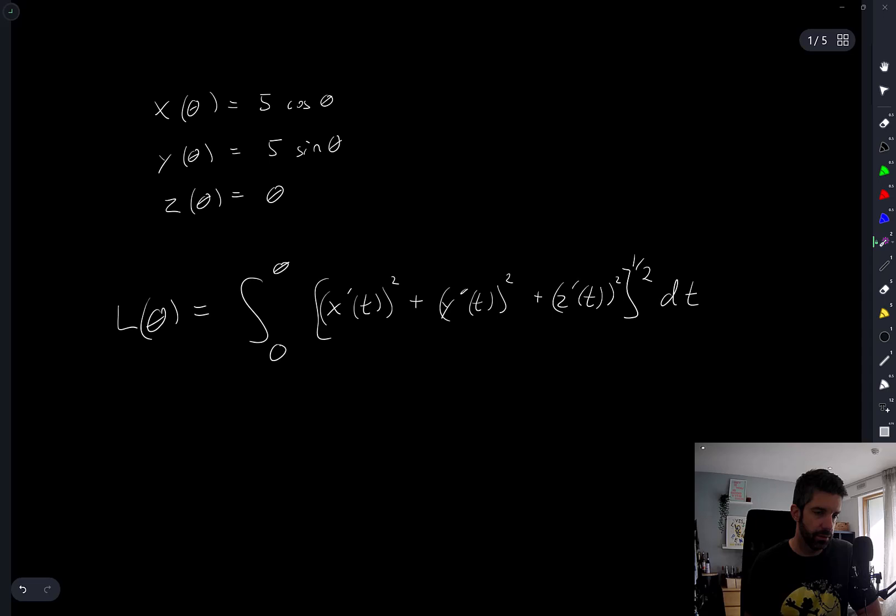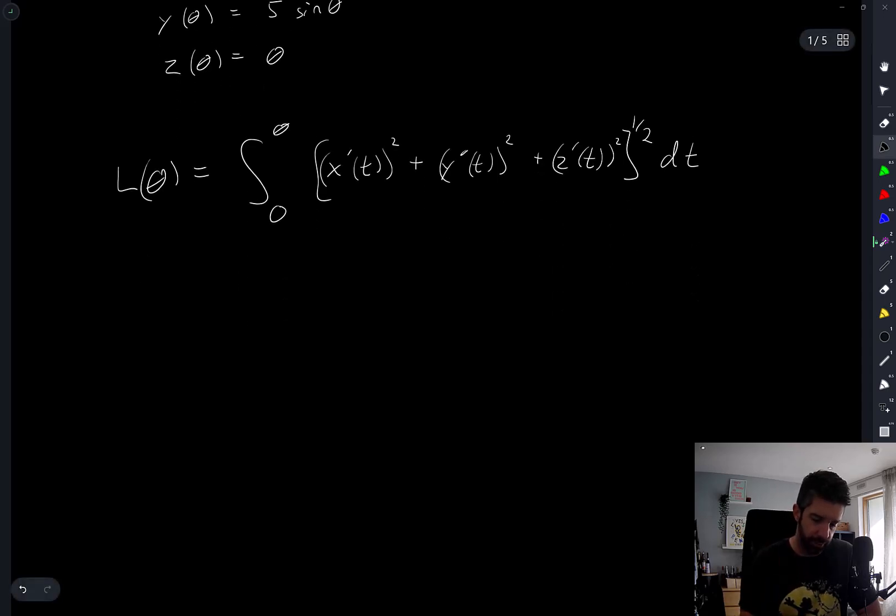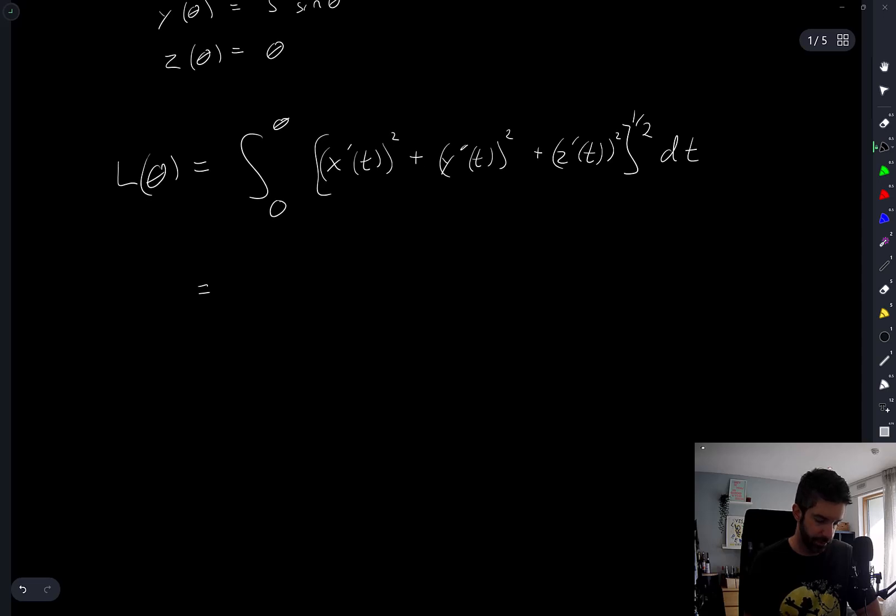Speed of the particle, speed integrated across time gives distance. So let's just compute this. Maybe some people have memorized the formula of arc length of a circular helix. I don't.